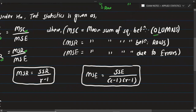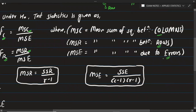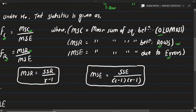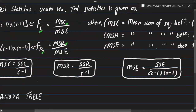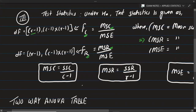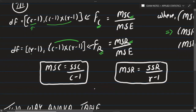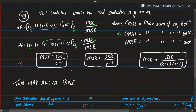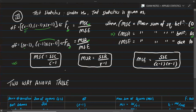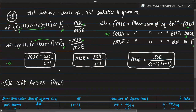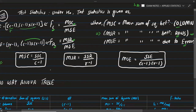MSC means sum of squares between columns. MSR means sum of squares between rows. MSE means sum of squares due to errors. For a two-way classification, we use both F_r and F_c. The degrees of freedom are: C minus 1 for columns, R minus 1 for rows. MSC equals SSC upon C minus 1, MSR equals SSR upon R minus 1, and MSE equals SSE upon C minus 1 into R minus 1.